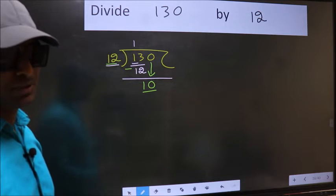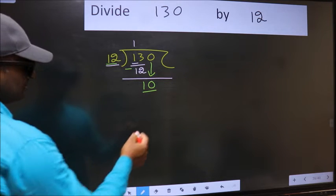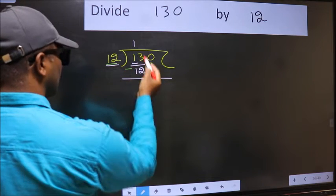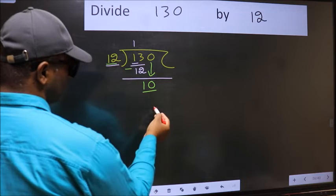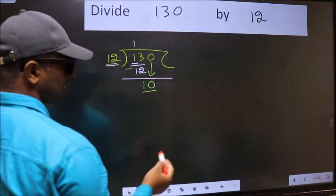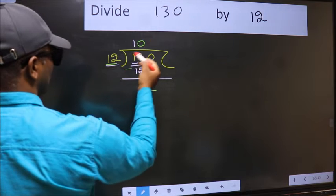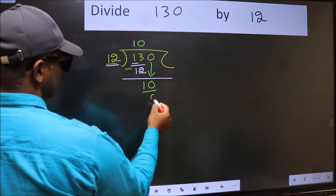what you should think of doing is, which number should we take here. If I take 1, we will get 12. But 12 is larger than 10. So what we should do is, we should take 0. So 12 into 0, 0.